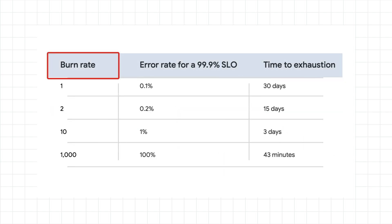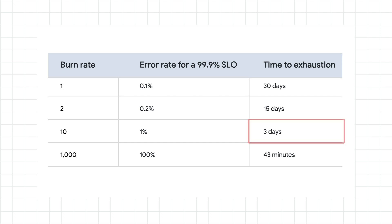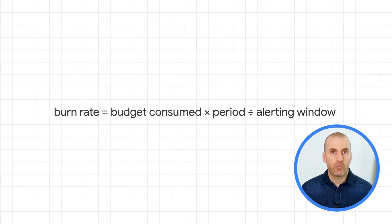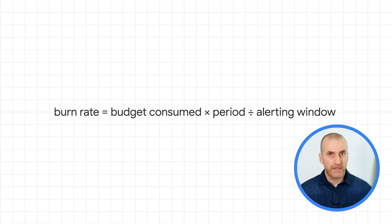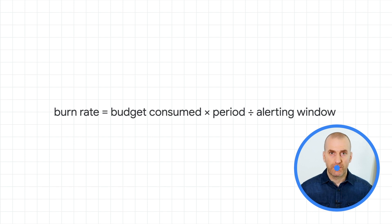We calculate our burn rate by looking at three main inputs: the SLO and its evaluation period, the amount of error budget consumed or burned, and the window over which that burn happens — that's the alerting window. Our burn rate is the amount of error budget consumed by the service multiplied by the SLO evaluation period and divided by the alerting window.